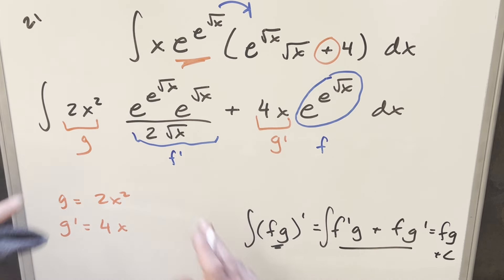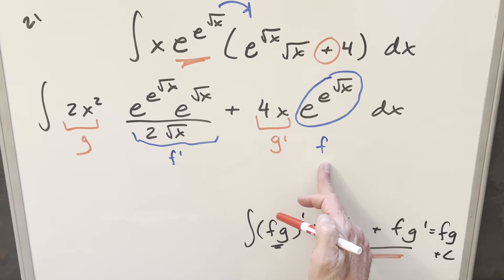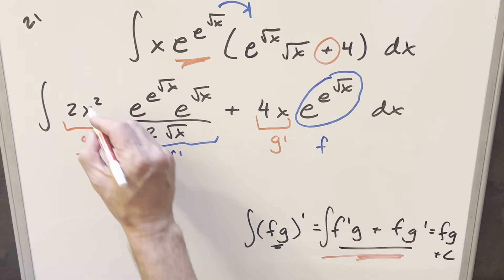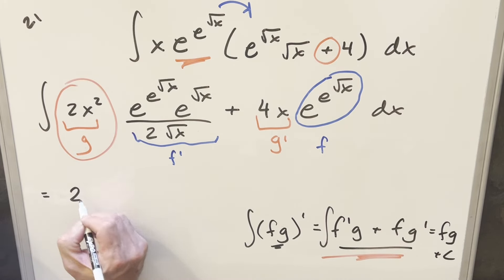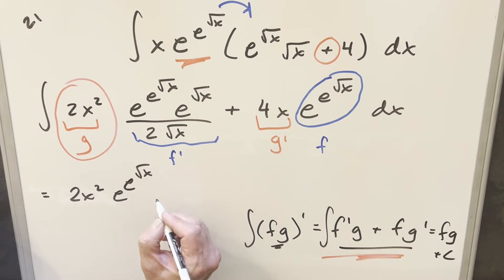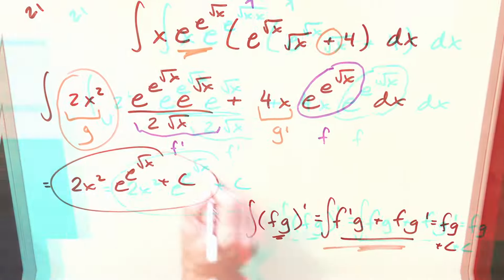So what we have here inside the integral is exactly set up for our product rule. So all we're going to need for our solution is just the f and g. We established f—it's going to be e^(e^√x). We have our g over here, so for my final solution, we just have 2x² times e^(e^√x) + C. And that's it.